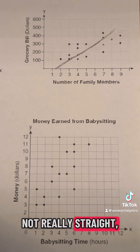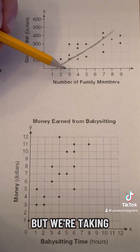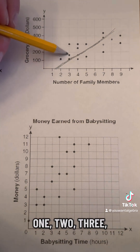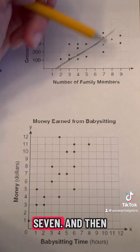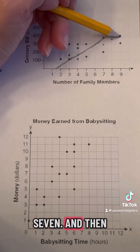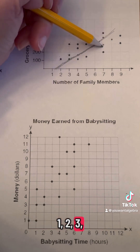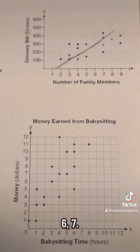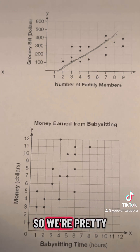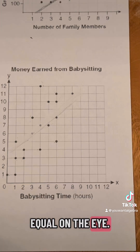Kind of like a straight line like that — of course that's not really straight, but we're taking a look at it. Counting the points: seven above and seven below. So six or seven on both sides — we're pretty equal. All right.